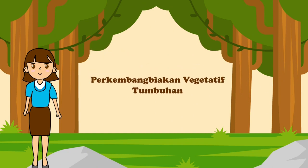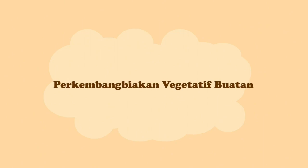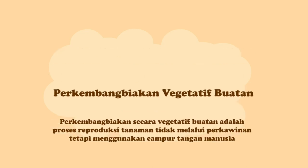Setelah memahami perkembangbiakan hewan, yuk kita pahami perkembangbiakan tumbuhan. Perkembangbiakan vegetatif pada tumbuhan dibagi lagi menjadi dua bagian, yaitu perkembangbiakan vegetatif buatan dan alami. Perkembangbiakan secara vegetatif buatan adalah proses reproduksi tanaman tidak melalui perkawinan, tetapi menggunakan campur tangan manusia.